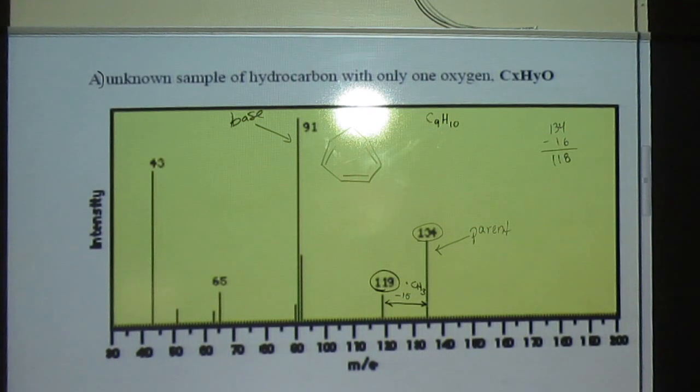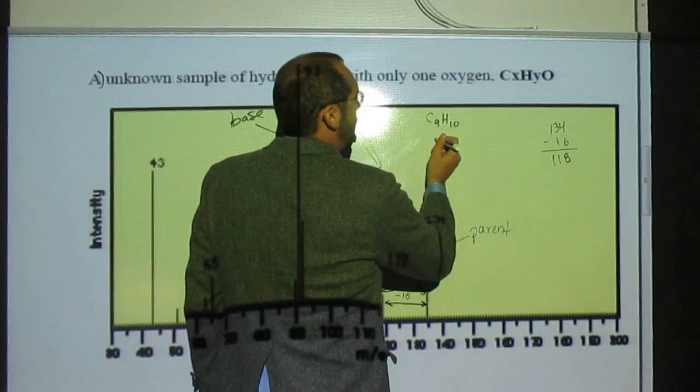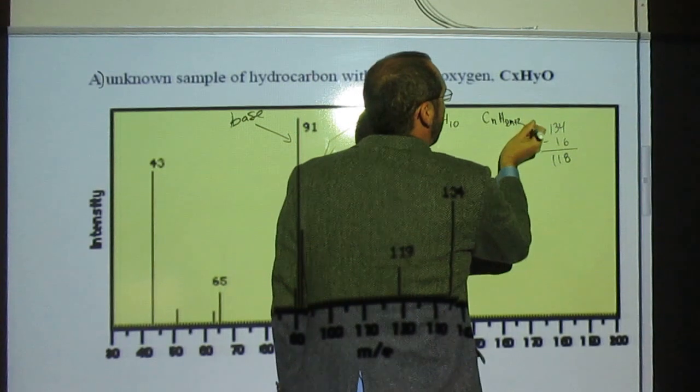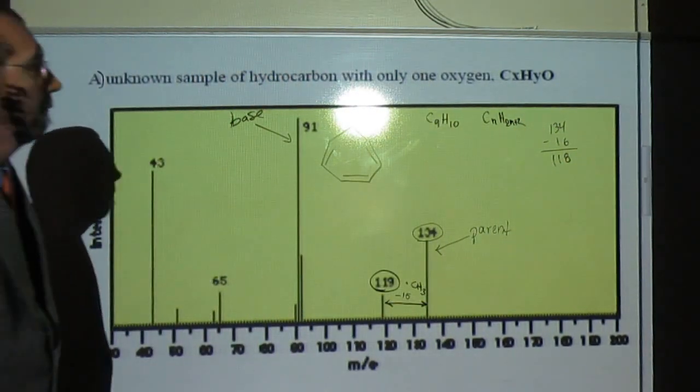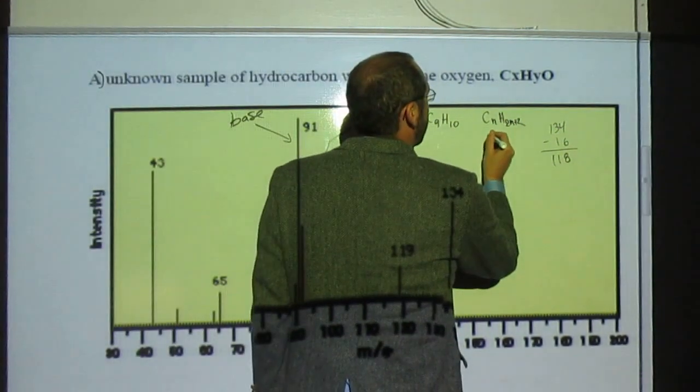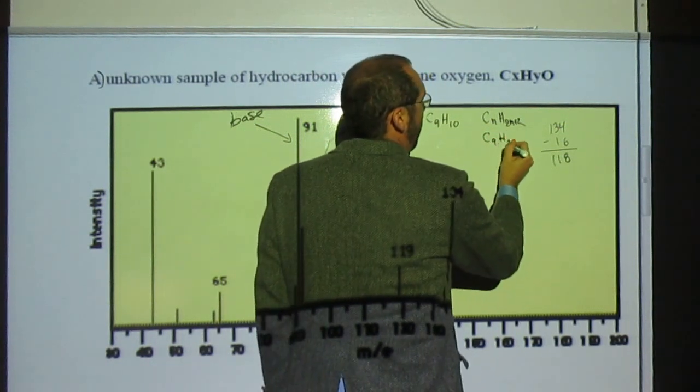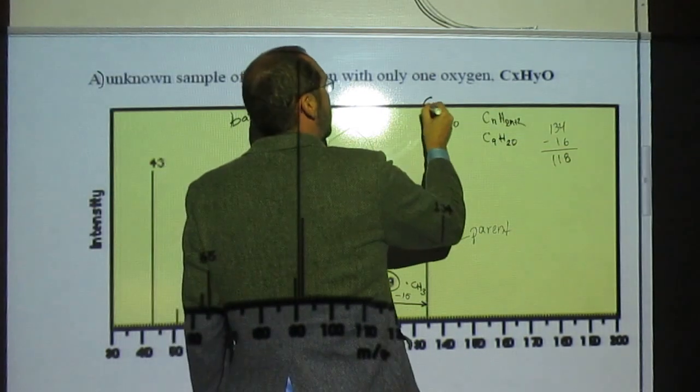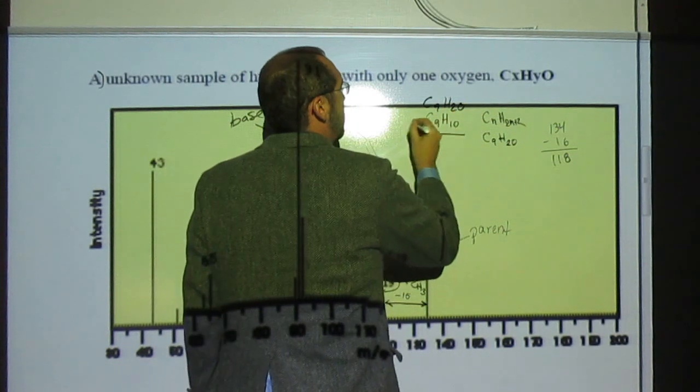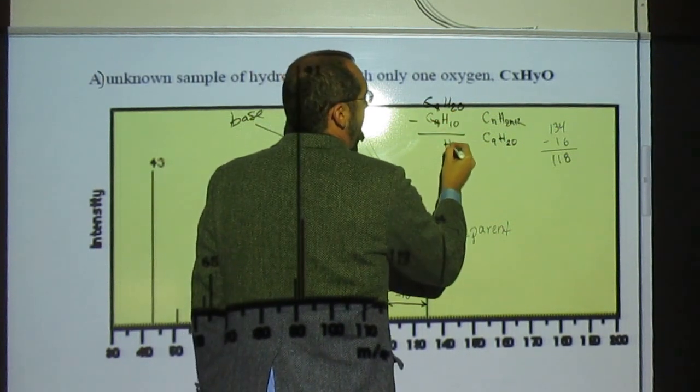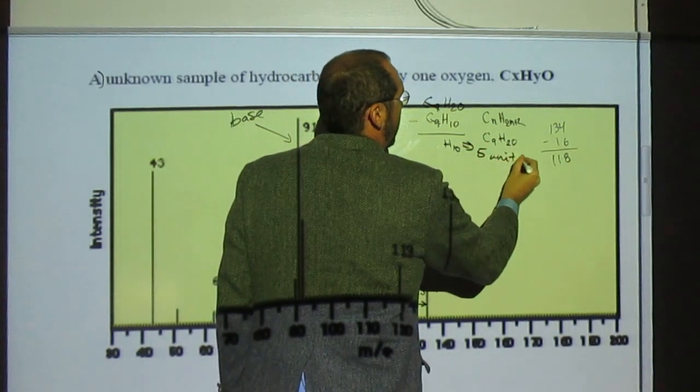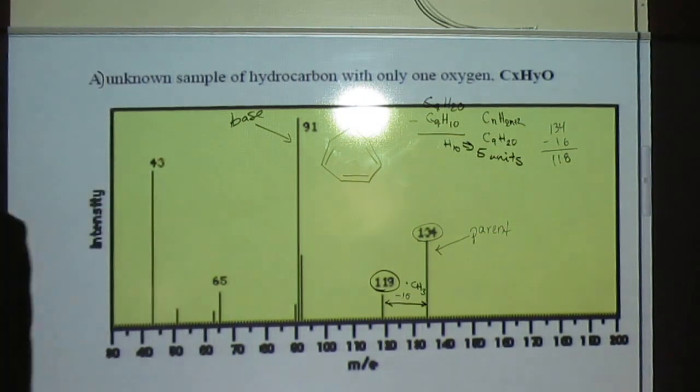So let's see how many units of unsaturation this is going to have. Okay. So it should be what? CnH2n+2. So that's C9H20. So how many units? So if we take C9H20, subtract C9H10, we get H10. So how many units? Five. Five units.